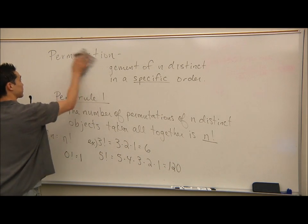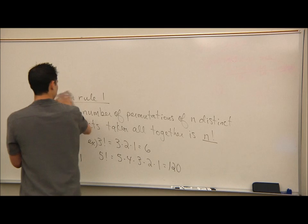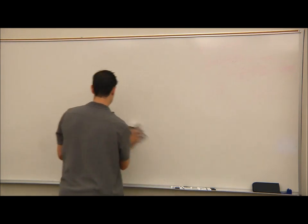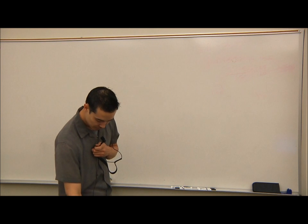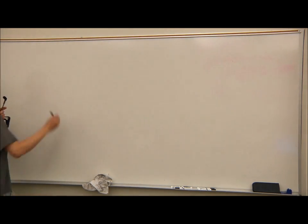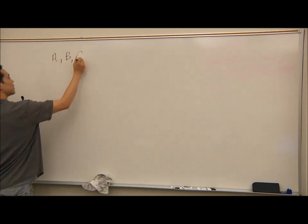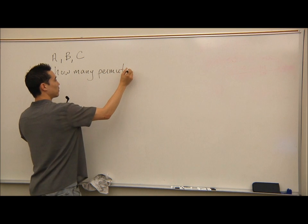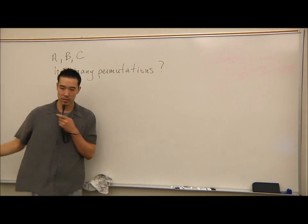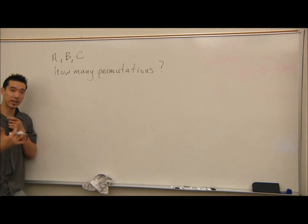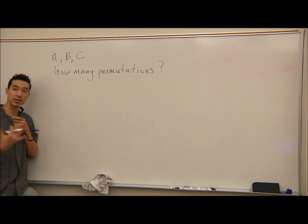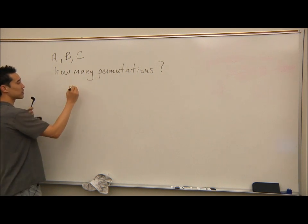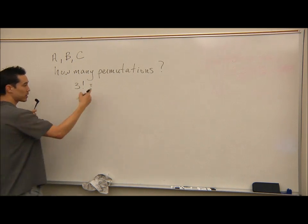Let's do example number 1: how many different permutations can be made with the letters A, B, C? We need to understand that means how many different ways can we arrange A, B, C, where every different order is a new permutation. Our rule says there are 3 distinct objects, so the answer is 3 factorial, which is 3 times 2 times 1, which is 6.